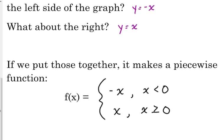You could put the equal sign on the first piece — it really does not matter. The order of the pieces doesn't matter either, as long as each inequality matches its correct equation. I always do left side first, then right side — left to right.